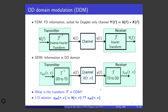Suppose this channel is doubly spread. There must be some relation between y_dd(τ, ν) and the transmitted information x_dd(τ, ν). It will not be a simple linear convolution. So we have two open questions: what is the transform T, and what is the operation linking y_dd and x_dd through the channel's delay-Doppler spreading function?